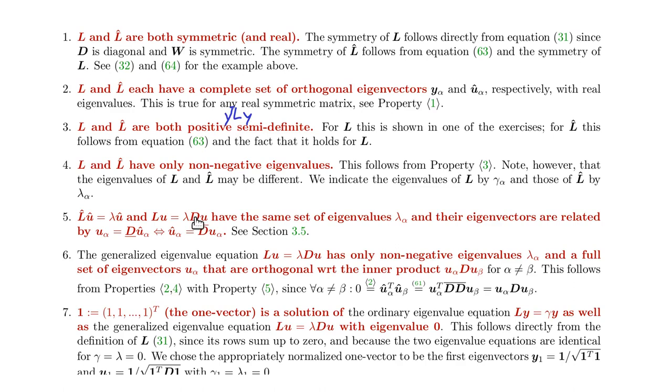Now since the eigenvalues are the same for the generalized eigenvalue problem as for the ordinary eigenvalue problem for the symmetric normalized Laplacian matrix, it's clear since this one is positive semi-definite, the eigenvalues here also has only non-negative eigenvalues and also has a full set of eigenvectors because this one has a full set of eigenvectors.